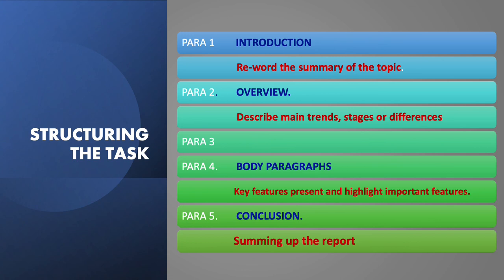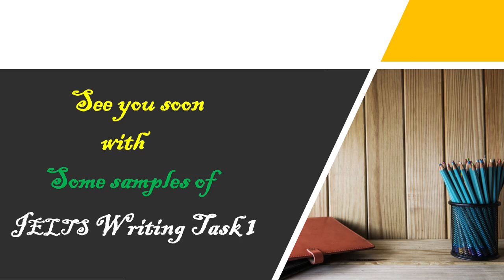Now, everything required for a perfect piece of writing is within your reach. Let's see how to plan and structure your essay. You need to organize the facts logically in five paragraphs. Open your essay by paraphrasing the topic, then include an overview describing main trends, stages, or differences. Then take the two groups separately and highlight the important features in the body paragraphs. Finally, conclude your essay by summing up the main points. Make sure you are well versed with all the tools before you start your writing. If you are ready, let's practice a sample writing task in my next video. Till then, bye-bye.